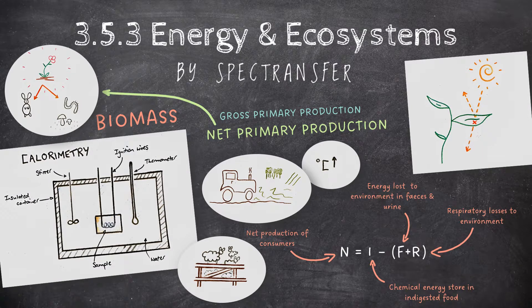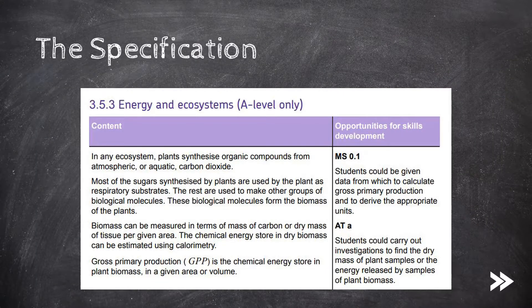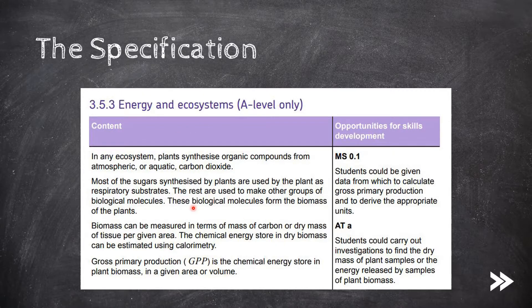Hey guys, welcome to Spec Transfer and to topic 3.5.3, energy and ecosystems from the AQA A-level biology specification. This part of the specification is relatively straightforward, and it's actually useful to learn it off by heart. In my A-level exam I was given a fill-in-the-gaps question which was word-for-word identical to the first two paragraphs shown here. Because I knew the spec and had included these sentences word-for-word in my notes, these were some easy marks to pick up.